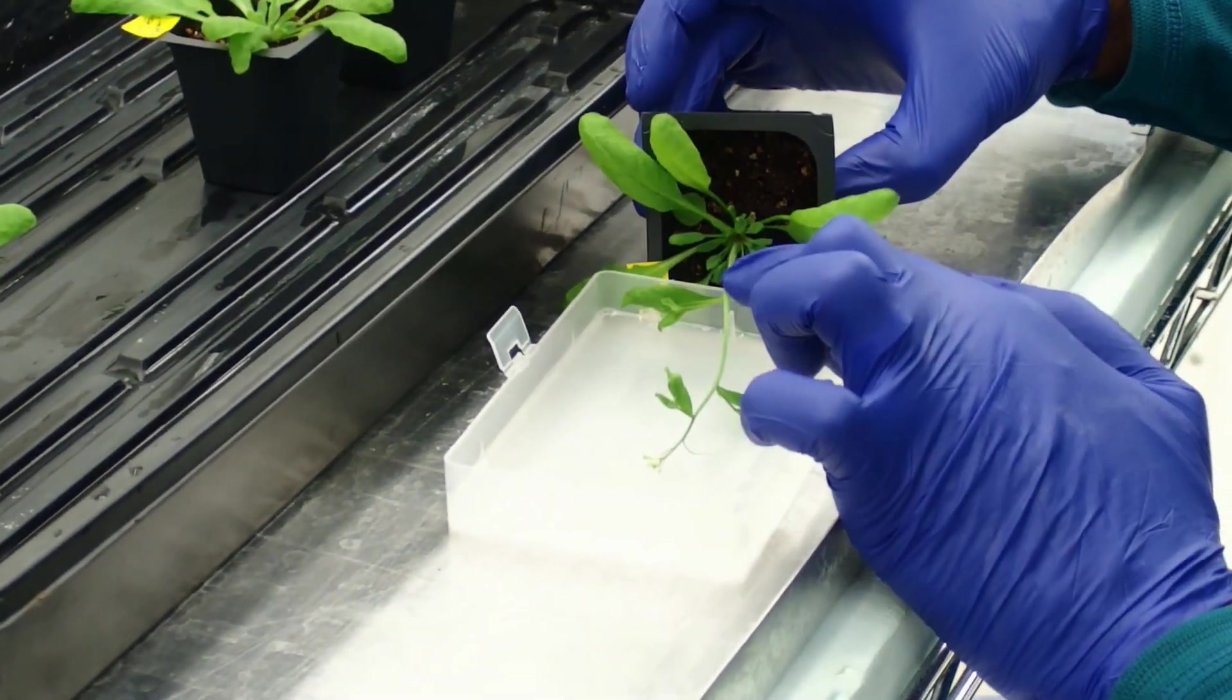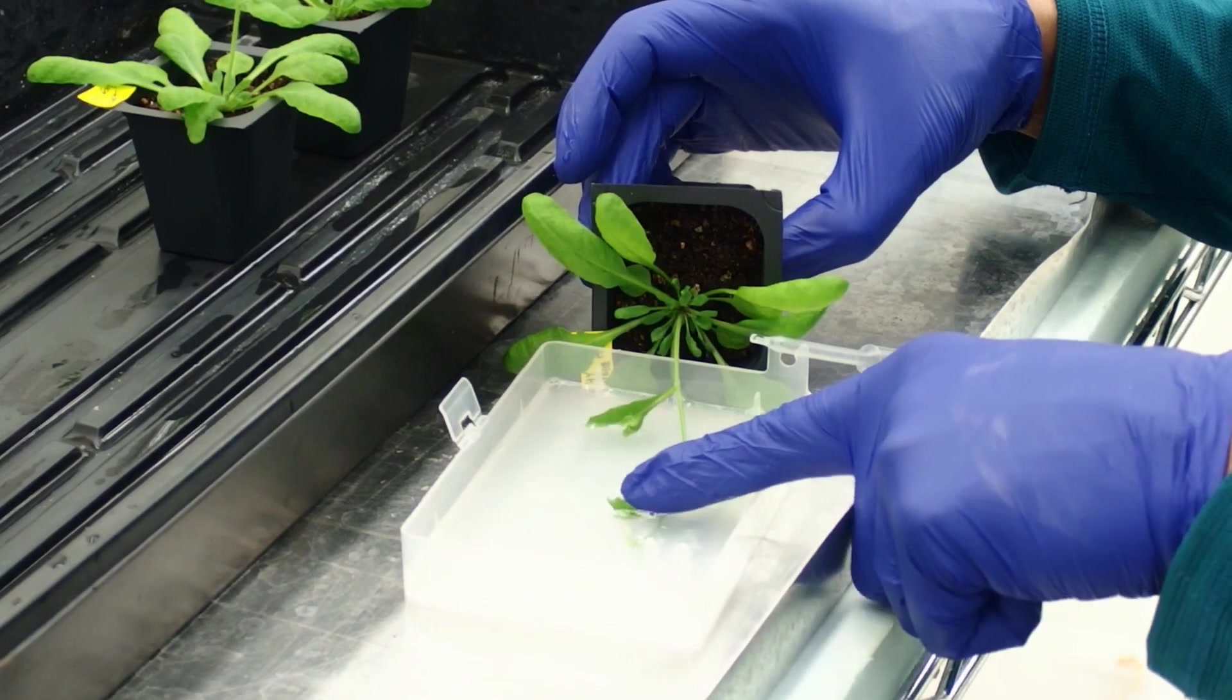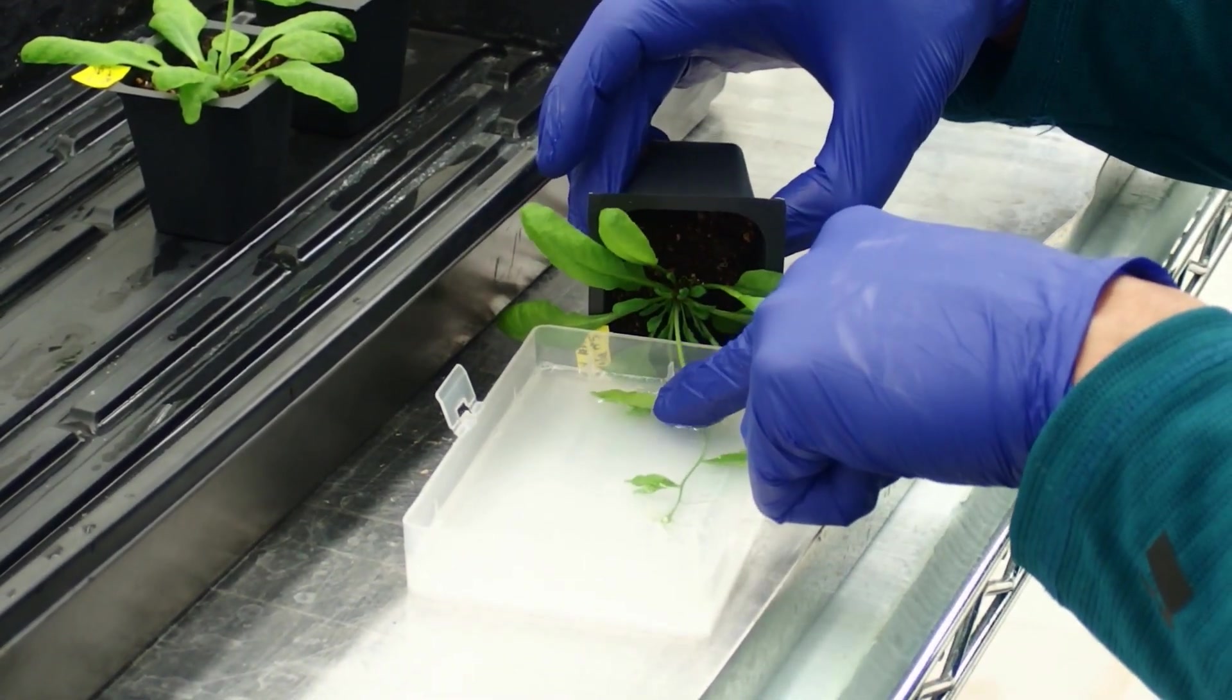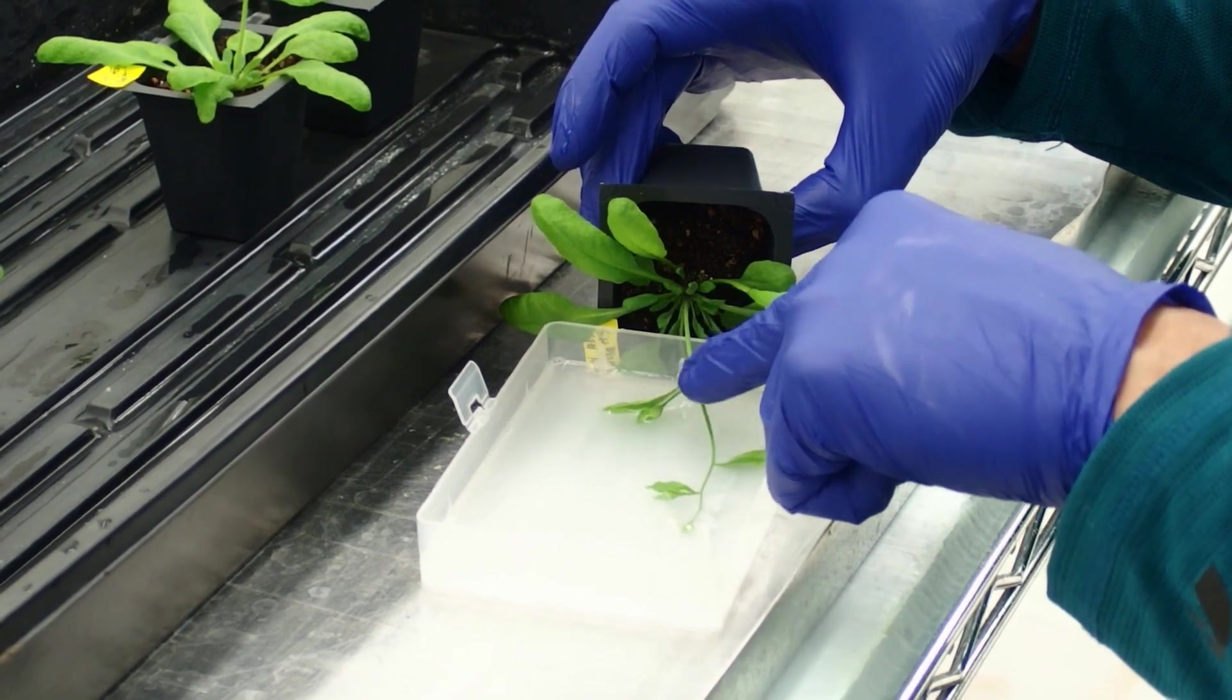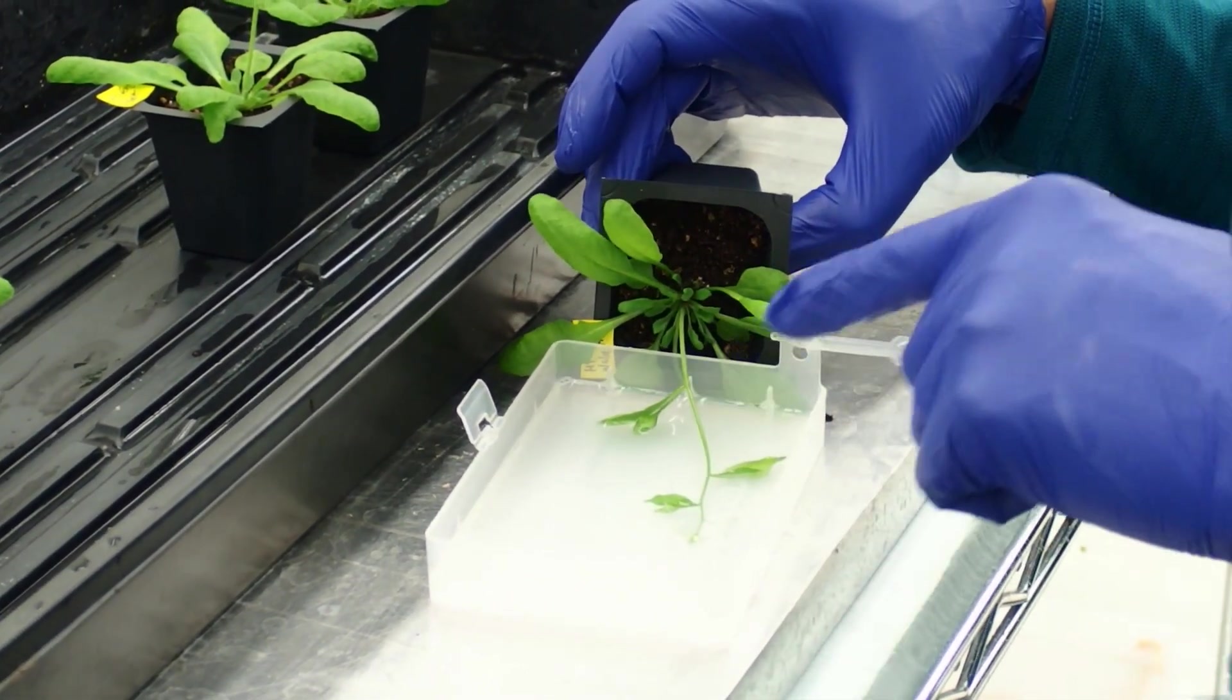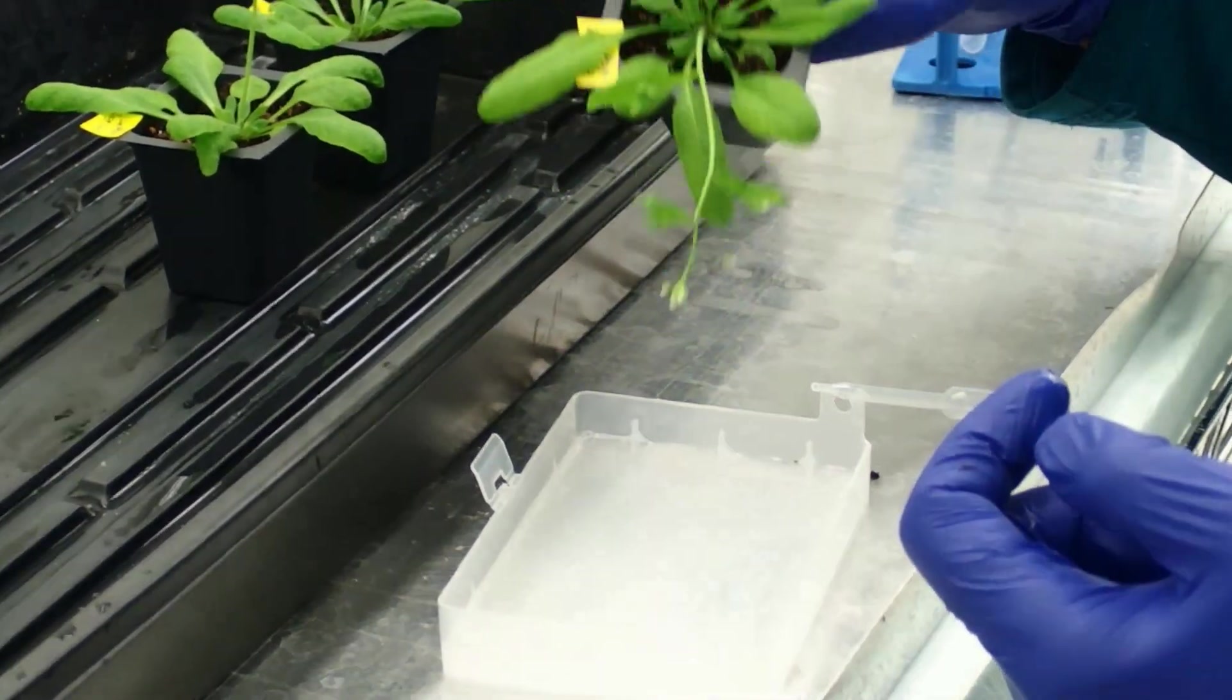And try to take the inflorescence and hold it into the Agrobacterium solution for 5 seconds or so. Try not to turn the pot completely upside down so that too much soil won't fall into the solution. Take that out.